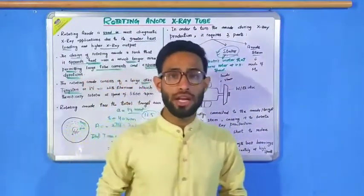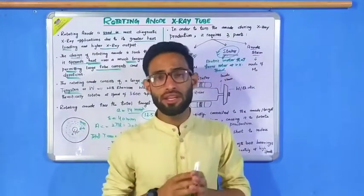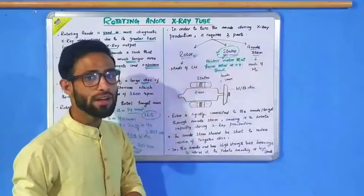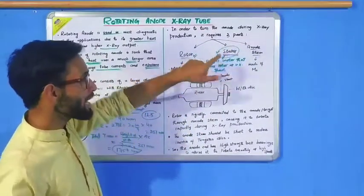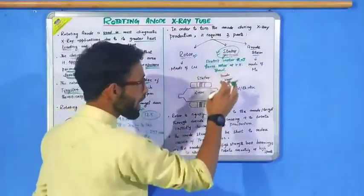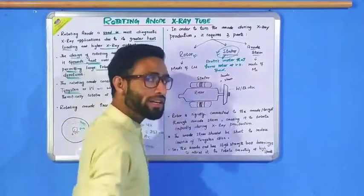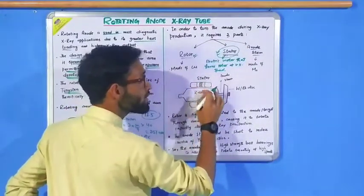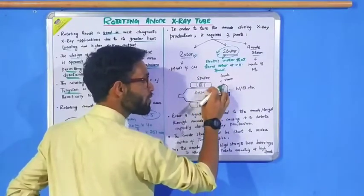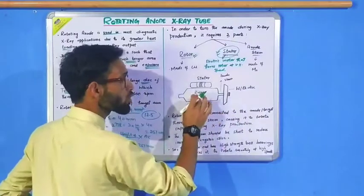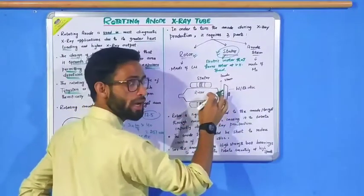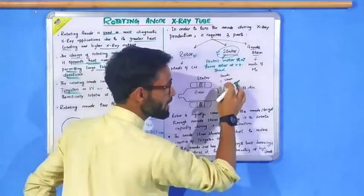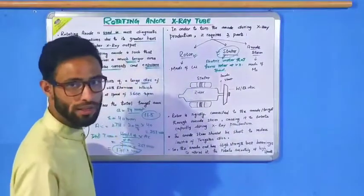To rotate the rotating anode, there are 3 components: the rotor, the stator, and the anode system. First, let us look at the stator. As you can see in this diagram, this is the stator. The stator is basically an electric induction motor that rotates the rotor at very high speed. When the rotor rotates at very high speed, it internally rotates the tungsten disk.